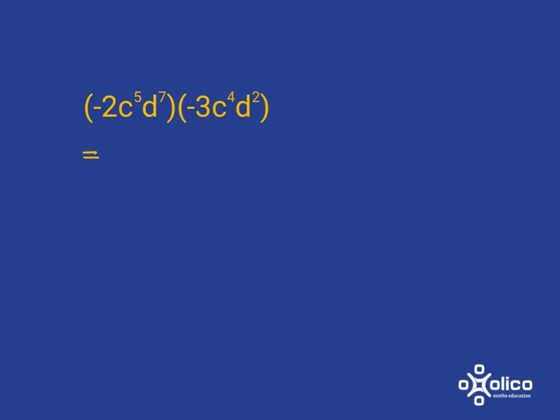So ordinary numbers, negative 2 and negative 3 multiplied together, give me, oh, I need a pen, give me 6. And then what I've got is C to the 5 and C to the 4 multiplied together. So I'm going to have 5 C's multiplied together and a further 4 C's multiplied together. And then with the D's, same story, I've got 7 D's multiplied together and a further 2 D's multiplied together. And so what I end up with is the following.